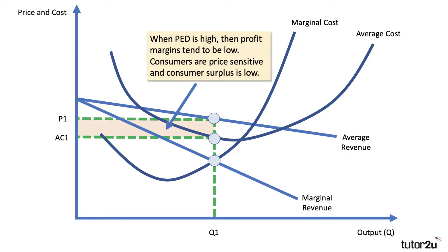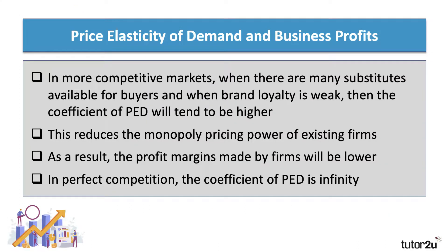When price elasticity of demand is high, profit margins tend to be low. There's less consumer surplus to be exploited and consumers are price sensitive. We typically find this in more competitive, more contestable markets where there are many substitutes available, where brand loyalty may be fairly weak, and this reduces the monopoly power of existing firms — as a result, margins made will be lower. In perfect competition, the coefficient of price elasticity of demand is infinite, each firm is a price taker, and in the long run they will only make normal profits because of the free entry of firms.